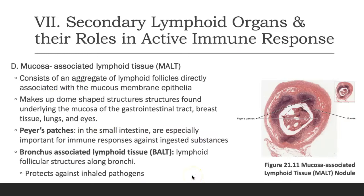MALT has lymphoid follicles directly associated with mucous membranes, forming dome-shaped structures underlying the mucosa in the GI tract, breast tissue, lungs, and eyes. Within the ileum, there are specialized areas known as Peyer's patches, which are important for the immune response against ingested substances moving through the GI tract. BALT, or bronchus-associated lymphoid tissue, contains lymphoid follicles along the bronchi that help protect the body against inhaled pathogens.